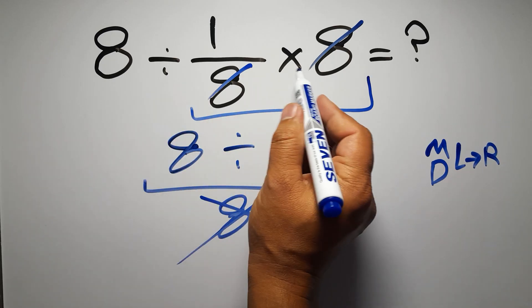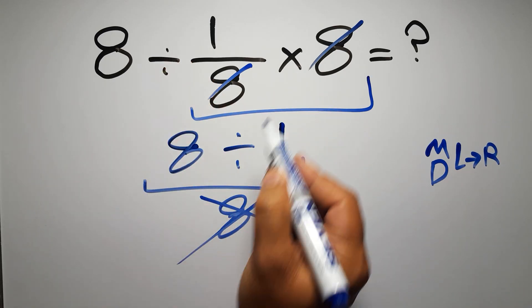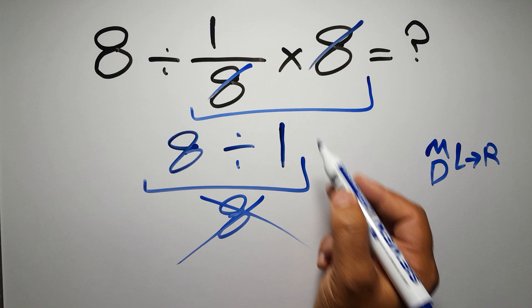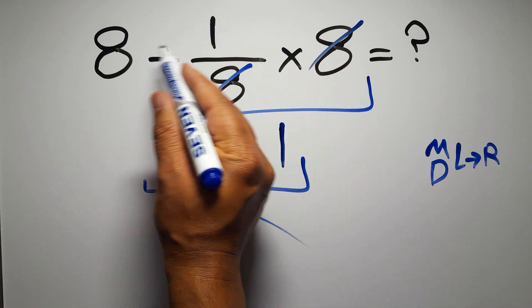So here first we have to do this division, then this multiplication. If we do this multiplication before this division, it is wrong.